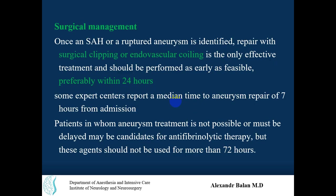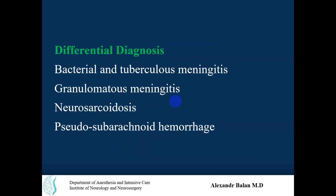Once a subarachnoid hemorrhage or ruptured aneurysm is identified, repair with clipping or endovascular coiling is the only effective treatment and should be performed as early as feasible, even within 24 hours. Some expert centers report a median time to aneurysm repair of 7 hours from admission. If the patient is in a severe state, they should be stabilized in the ICU before surgical intervention. Differential diagnosis includes bacterial or tuberculous meningitis, granulomatous meningitis, neurosarcoidosis, and pseudo-subarachnoid hemorrhage.